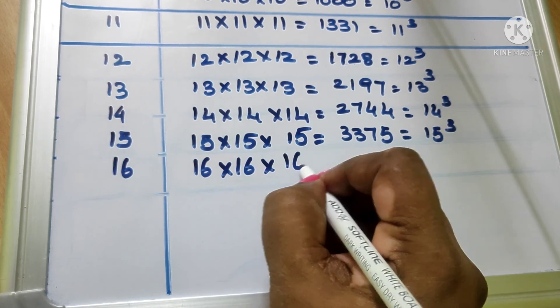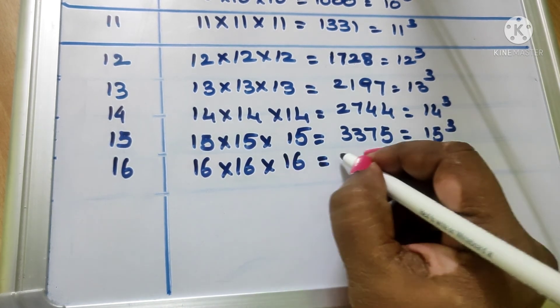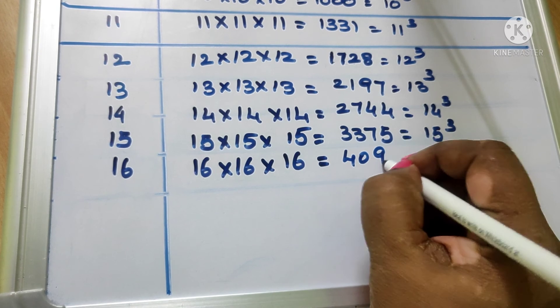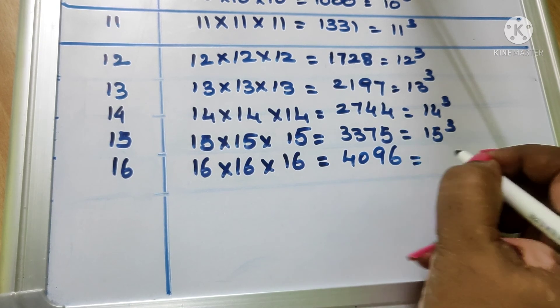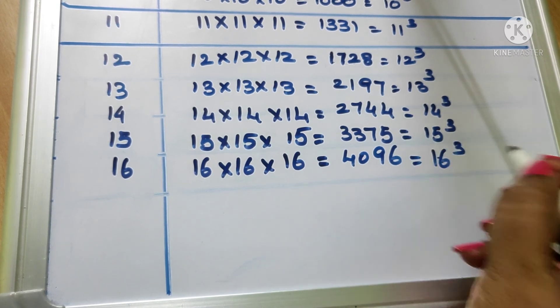16 into 16 into 16 equal to 4096. We write as 16 cube.